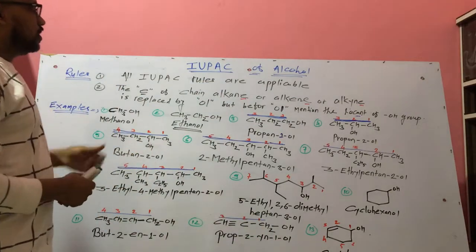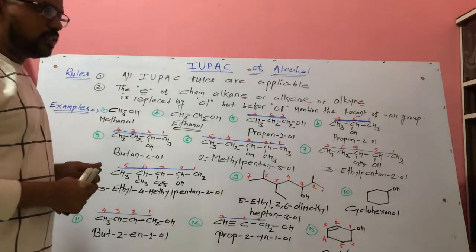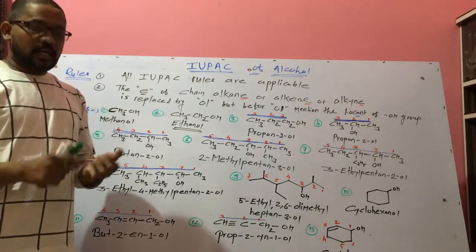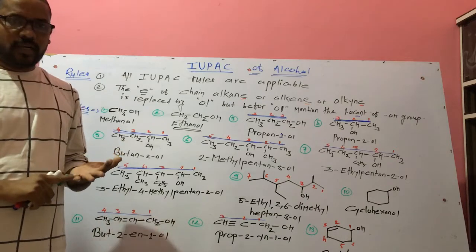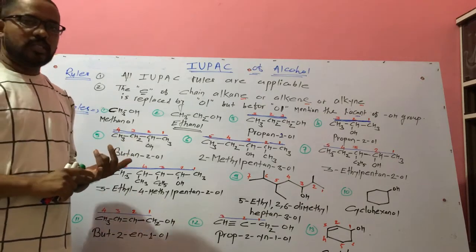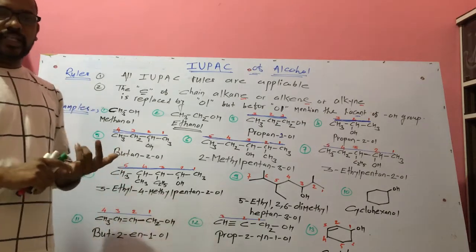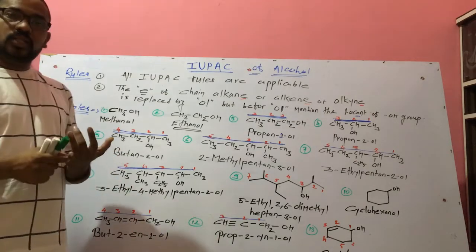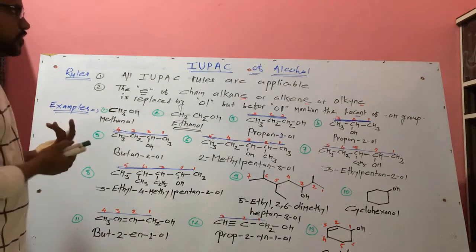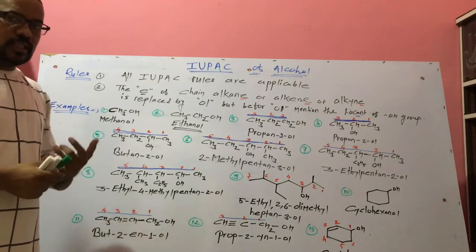In case of IUPAC nomenclature of alcohol, the IUPAC system has its own rules. The first rule is to select the longest continuous chain of carbon atoms. The second rule is related to numbering — numbering should start from that carbon atom in which the functional group is attached, carrying the minimum number. The third rule is related to branches: if the compound contains a branch, first write down the name of the branch, then the parent alkane or alkene or alkyne.